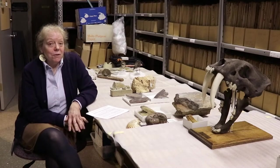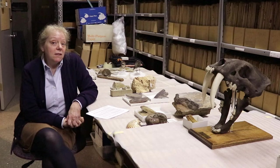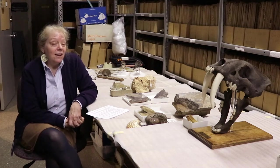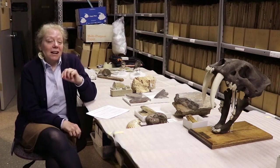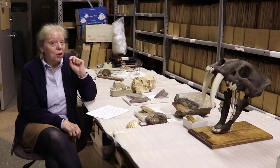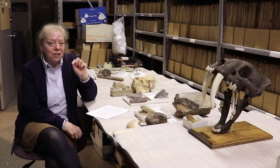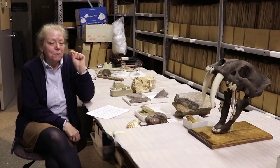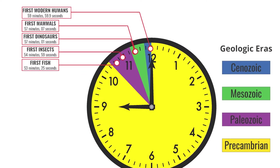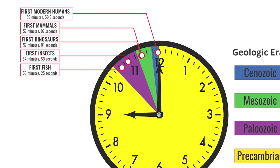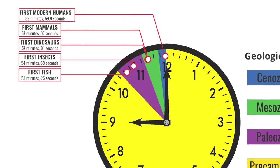Our own ancestors arrived in the Cenozoic, about seven million years ago. If you want to really blow your mind, think about how long humans — especially Homo sapiens, our species — have actually been on the planet. It's just a tiny little speck compared to that 4.6 billion years.